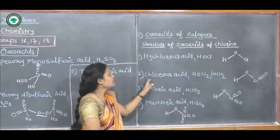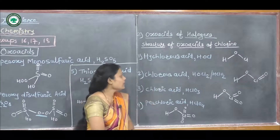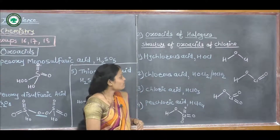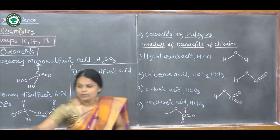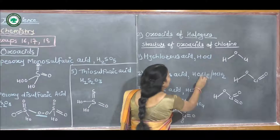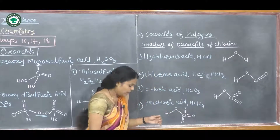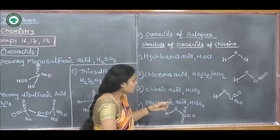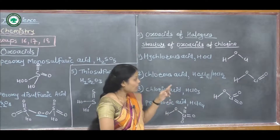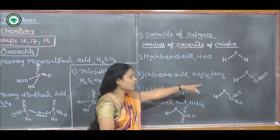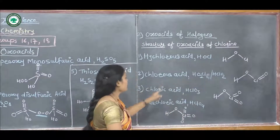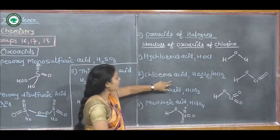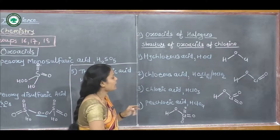The second structure is chlorous acid. Its formula is HClO₂. Here one chlorine atom is present with two oxygen atoms. Chlorine has a double bond to one oxygen, a single bond to another oxygen, and an OH bond. The number of oxygen atoms increases compared to hypochlorous acid. This is chlorous acid.